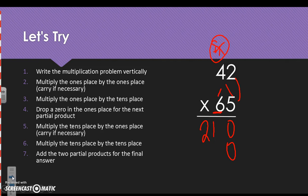We do 6 times 2 is equal to 12. Carry the 1, drop the 2. And then the tens times the tens. We need to add this 1 that we carried. So 6 times 4 is 24, plus 1 is 25. Add up our partial products. So we get a final answer of 2,730.